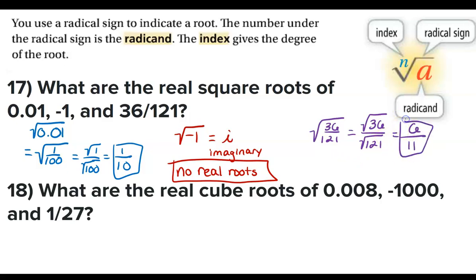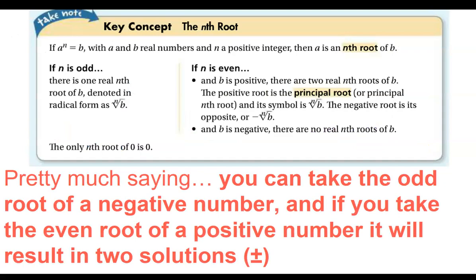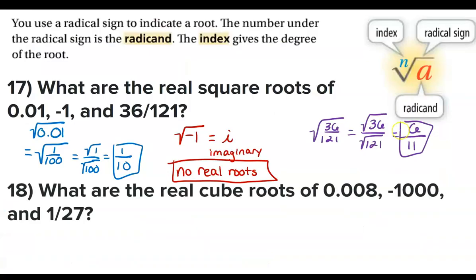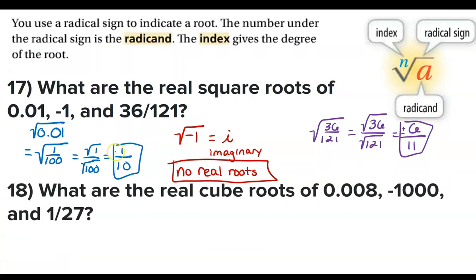Now, since we just had this whole conversation about taking even roots, we need the plus or minus symbol. So this should technically be plus or minus 6/11, and the first answer should technically be plus or minus 1/10. Even roots get the plus or minus symbol.